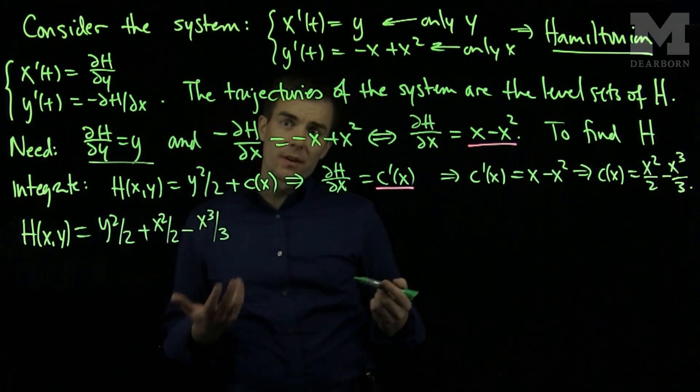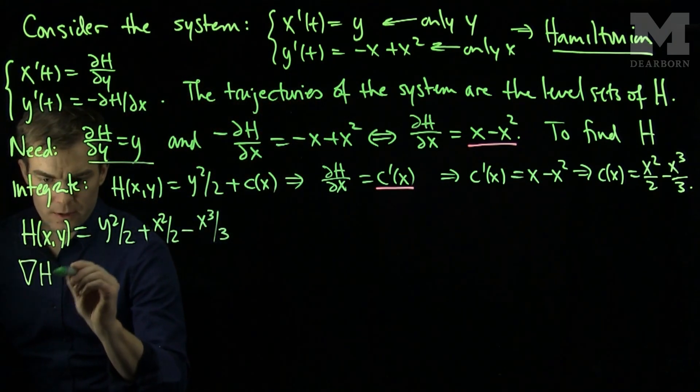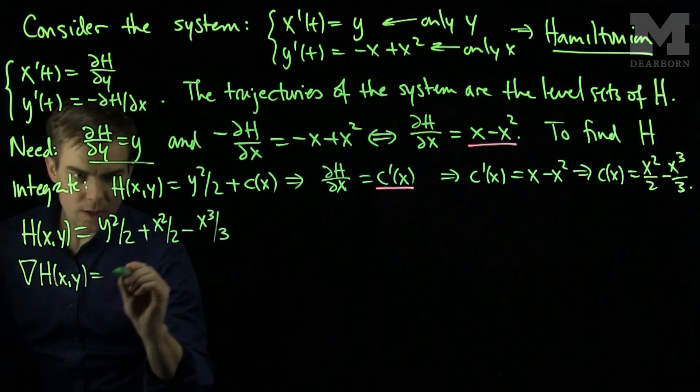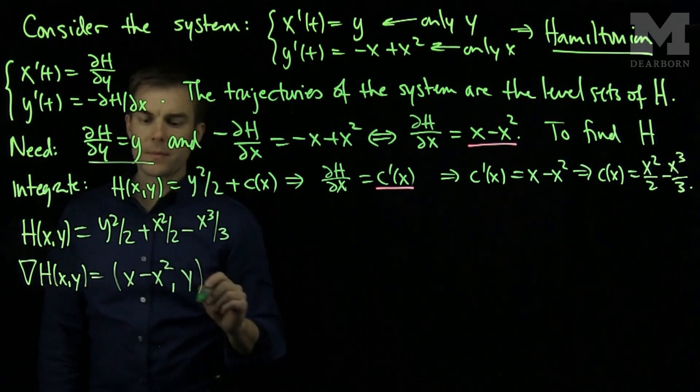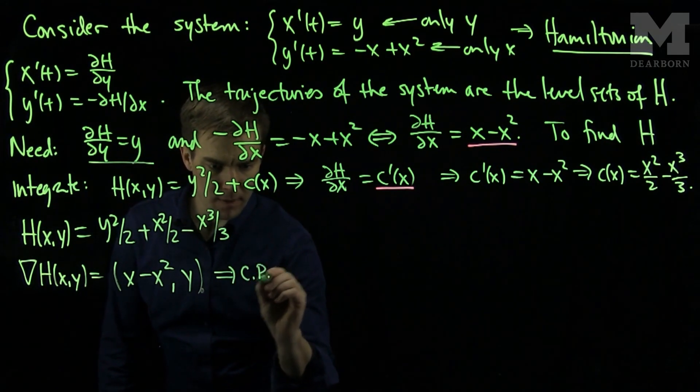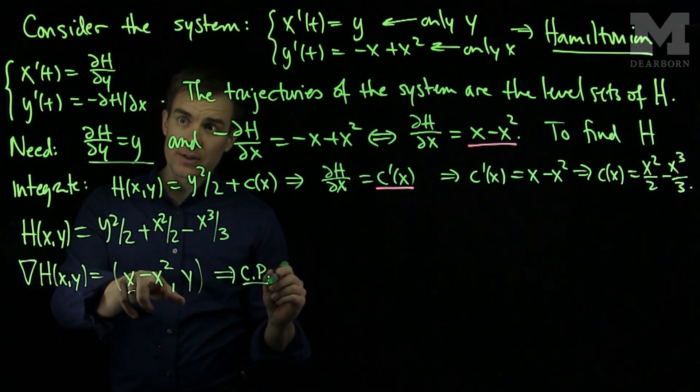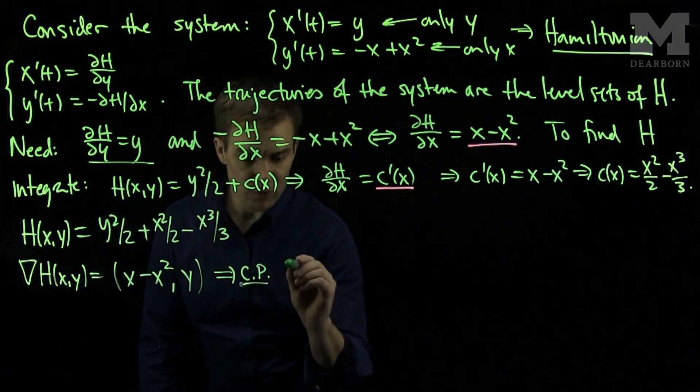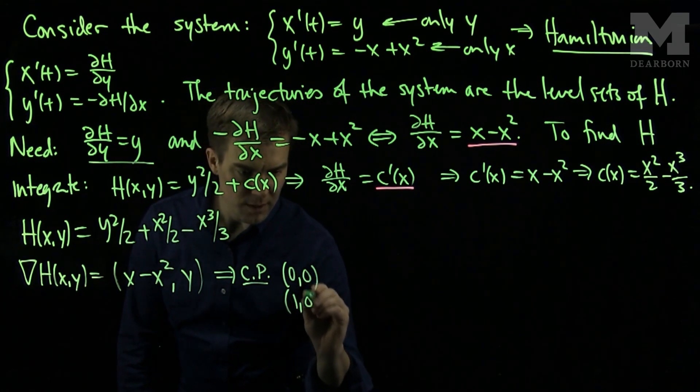Now, to find the level sets of H, we'll find the gradient. So the gradient of H will be (x - x², y). And the critical points of the Hamiltonian will be when y = 0 and x - x² = 0. So our critical points will be (0,0) and (1,0).